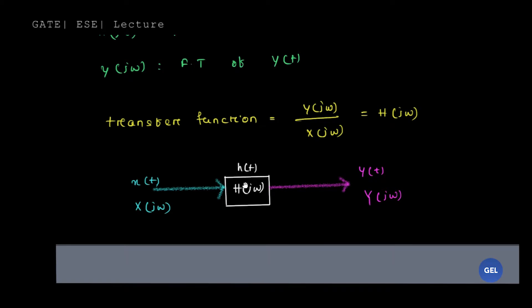In the frequency domain, that h(t) is nothing but H(jω). Similarly, the excitation given to the system is x(t), and in frequency domain it's X(jω). Y(t) is the response, and in frequency domain that is nothing but Y(jω).